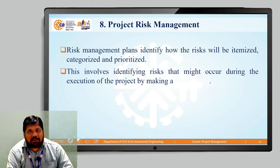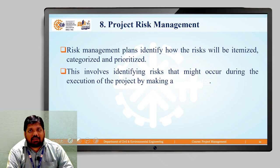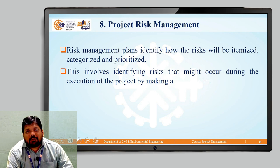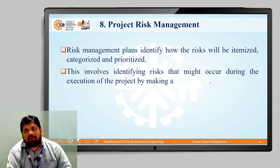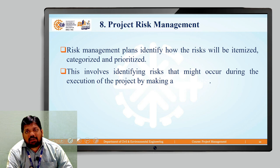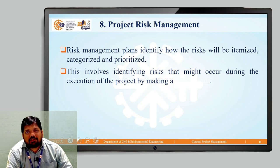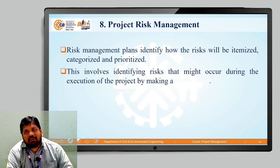The next one is project risk management. Project risks are very important. Generally, risk can be defined as anything that happens without a plan — accidents that can happen. We have to plan for such conditions. Risk management plans identify how risks will be itemized, categorized, and prioritized. We have to give priorities to various risks — those associated with cost, working conditions, or time. We identify them, assign certain quantum to them, and manage those risks. This involves identifying risks that might occur during the execution of the project by making a risk management plan.